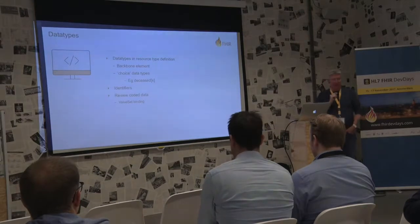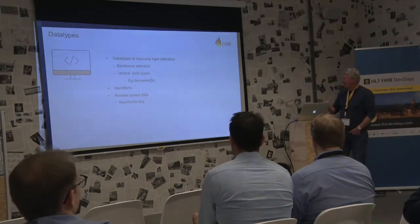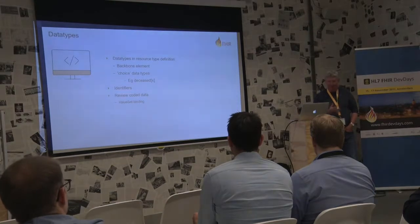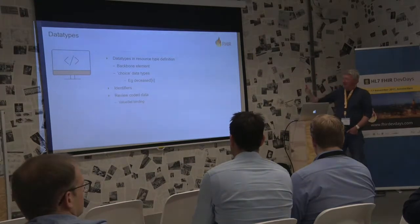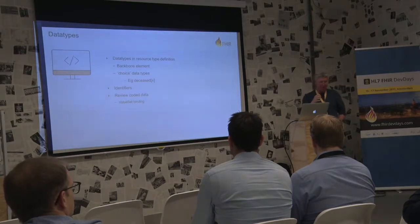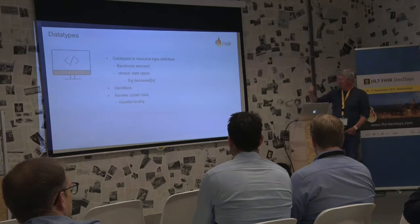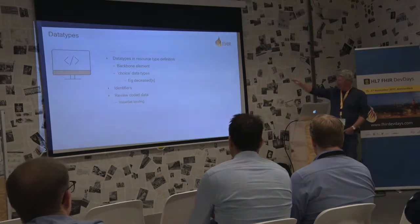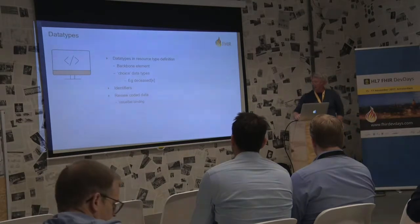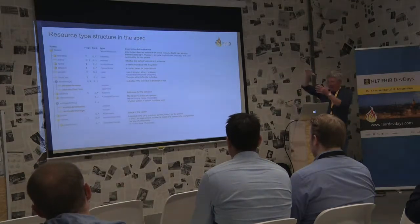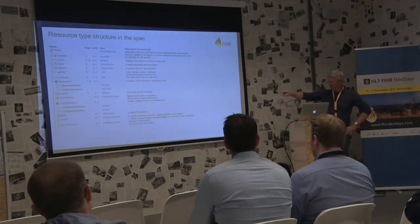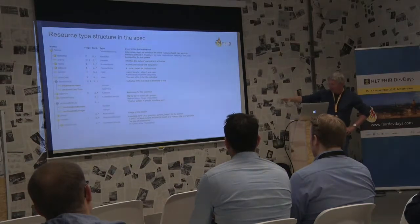On data types: you can think of a resource almost like a bag of data types — the data types are the fundamental blocks that make up the resources. You'll see something called a backbone element, as shown under 'contact.' That's used when you've got another layer down the tree — it doesn't contain data itself, but the contact has children underneath it like 'relationship.' You can have multiple contacts each with a relationship.